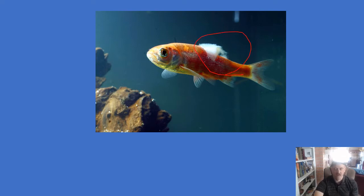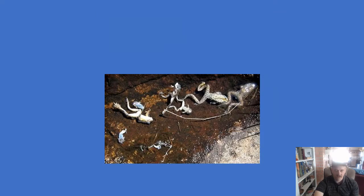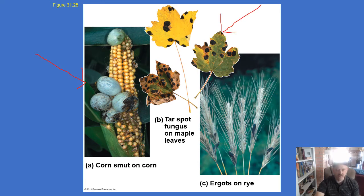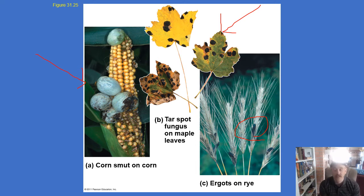Fungi can also cause diseases. You may have seen something like this in goldfish. They kill amphibians as well. They can also invade crops — here we see corn smut, a growth on corn, fungus on leaves, and ergot on rye. Those little things on rye plants: ergot is basically a fungus that produces something very close to LSD. People eating bread made from rye that had ergot back in the Middle Ages may have led to some of the witch trials, due to the odd behavior of people tripping on this fungus.